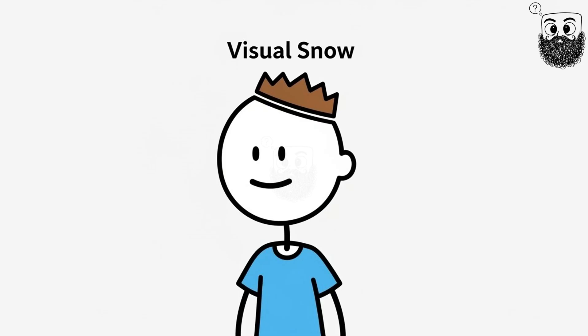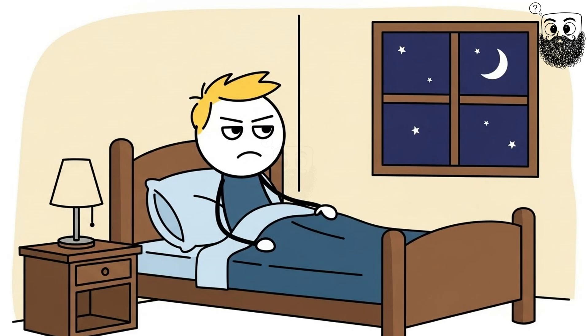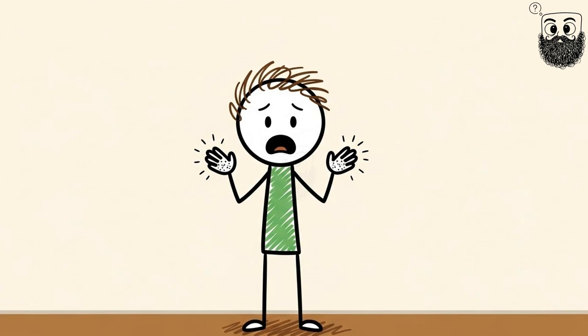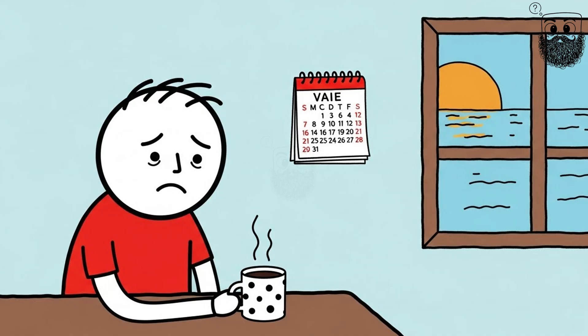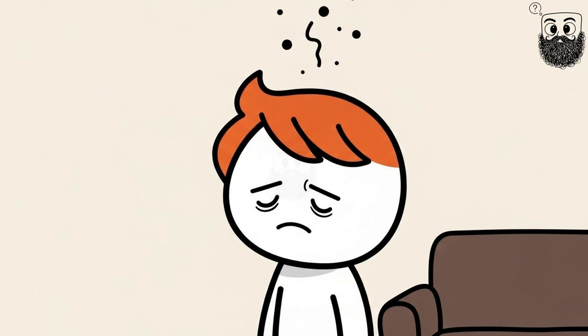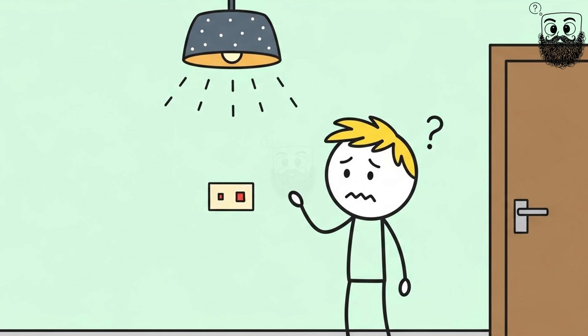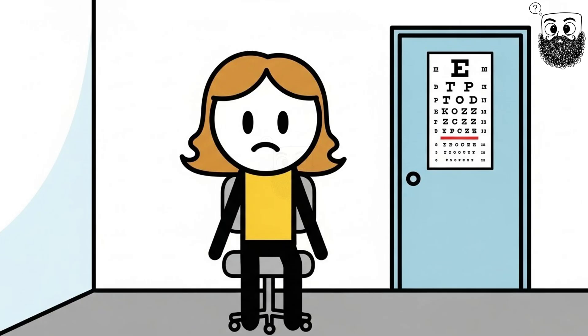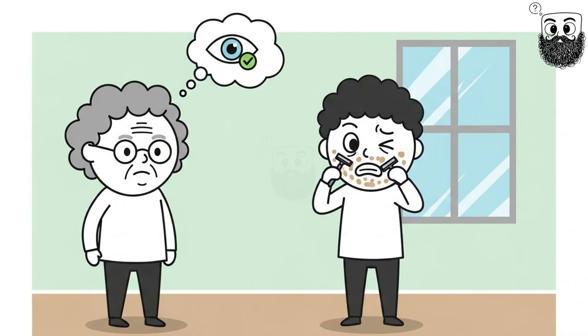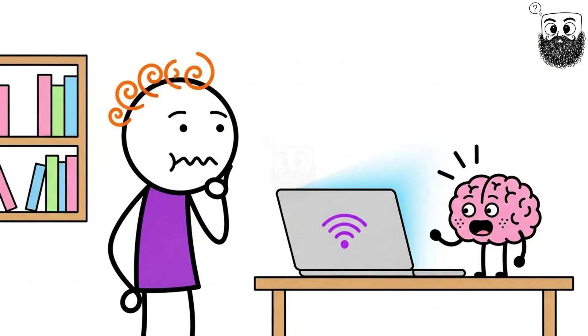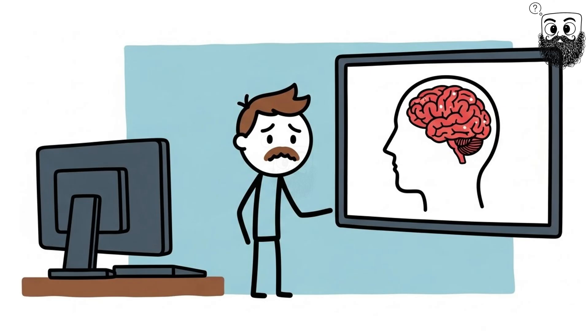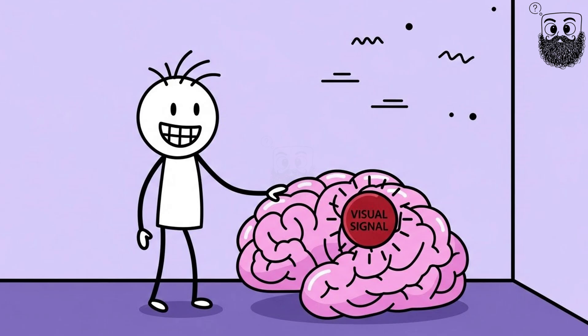2. Visual Snow. Picture this. You wake up and your entire world looks like a broken TV screen. Tiny flickering dots dance across everything you see. Your morning coffee, your friend's face, the sunset, all covered in static. Close your eyes, the snow's still there. Turn on the lights, still snowing. This isn't some rare eye disease either. Your eyes are perfectly fine. The glitch is happening in your brain. Scientists think your brain's visual processing unit has some kind of permanent interference, like someone's constantly messing with the signal.